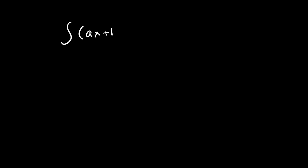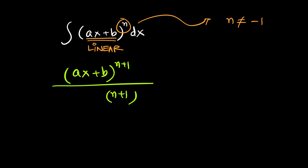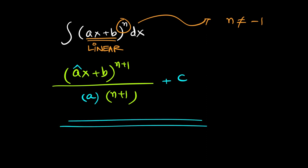These were a few examples of the application of the chain rule. In this video, what we have learned is that whenever we integrate a bracket with a linear expression on the inside and a power on the outside — where the power can be anything except −1 — increase the power by 1, divide by the new power, divide by the coefficient of x or derivative of the bracket, and add c, the constant of integration.